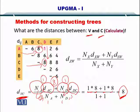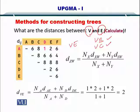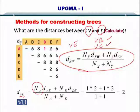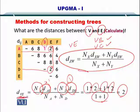We keep computing the distances. Now we are looking at V and E. We have already computed the distance between V and B and V and C, so those two are done. To compute the distance between V and E, you use the same formula. The number of sequences in A is 1, the distance between A and E is 2. The number of sequences in D is also 1, and the distance between D and E is 2. So the distance between V and E is equal to 2.